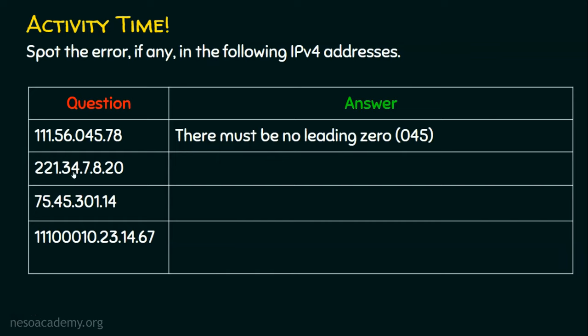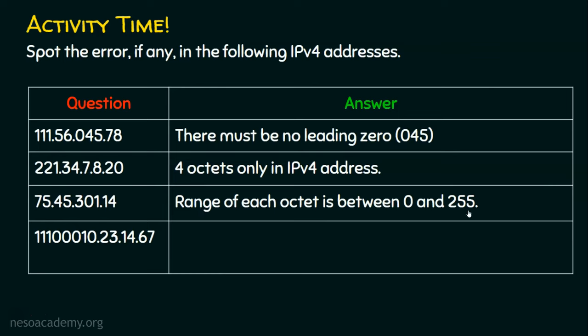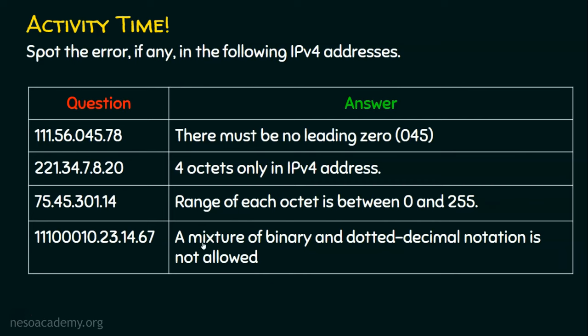What about the second example? There are 5 octets — 1, 2, 3, 4, 5. Any IPv4 address will have only 4 octets. And what about the third example? We have 4 octets, but the third octet is bigger than 255. Every octet in an IPv4 address must be between 0 and 255, so this is invalid because the range of each octet is between 0 and 255. And the last one is a combination of binary and decimal — a mixture of binary and dotted decimal notation is not allowed.